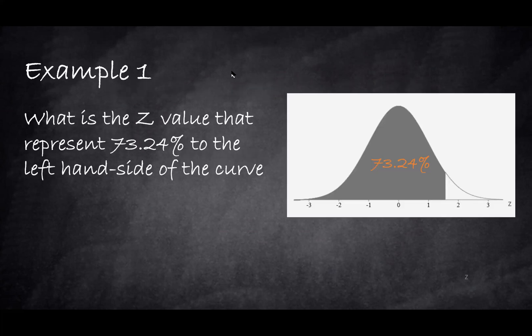Here is example number one. What is the Z value that represents 73.24% to the left-hand side of that curve? Obviously this is the standard normal distribution curve. So how do we find this Z value?